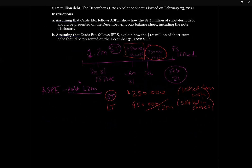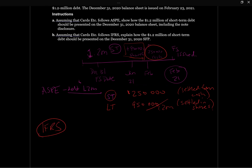What would IFRS say? IFRS is much easier. IFRS says forget about all this — what matters is unless there was something negotiated as at the statement date that would require the debt to be refinanced to long-term, anything that was financed after that date is irrelevant. So IFRS would simply say your short-term debt is going to be $1.2 million.